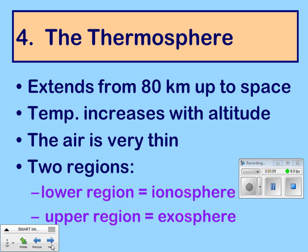The thermosphere extends from 80 kilometers up to space. Temperature increases as altitude increases — the same as in the stratosphere. The air is very thin here because we're getting further away from the Earth, so the atmosphere is getting thinner. The thermosphere has two separate regions: the one closer to the Earth's surface is called the ionosphere, and the one up against space is called the exosphere — exo, like you're exiting, the last outermost layer of the Earth.